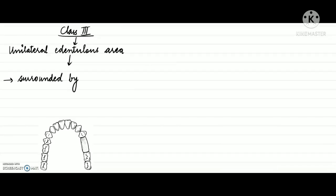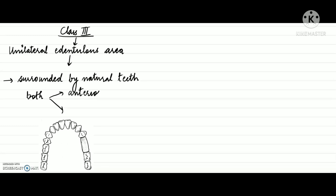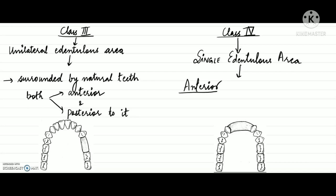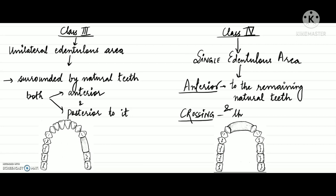In Kennedy's class 3, there is a unilateral edentulous area that is surrounded by natural teeth both anterior and posterior to it, as seen in this picture. Kennedy's class 4 refers to a single edentulous area that is anterior to the remaining natural teeth and crosses the midline, as shown in this diagram.